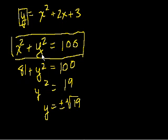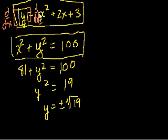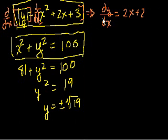With that out of the way, let's do some differentiation. Everything you've learned so far has been explicit differentiation. For an explicitly defined function, we just apply the derivative operator to both sides. Taking the rate of change of both sides with respect to x, on the left we get dy/dx, and on the right the derivative of x squared plus 2x plus 3 is just 2x plus 2.